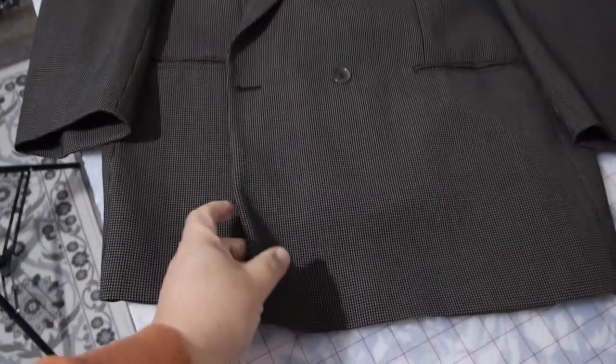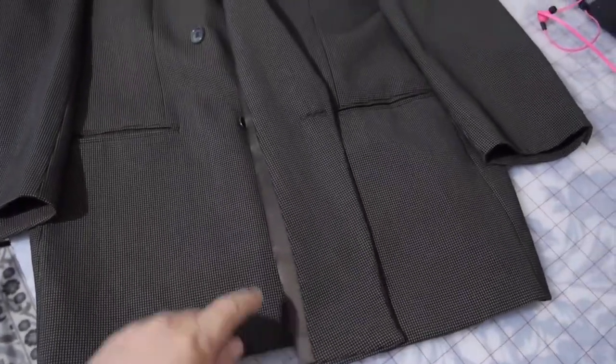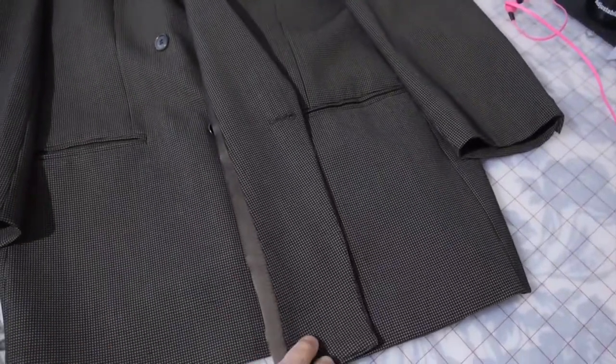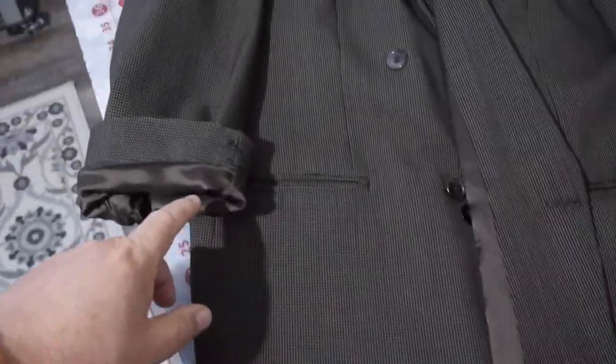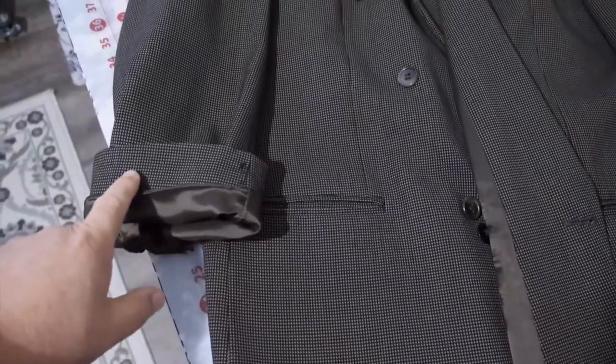So what you could do is what the tailor did in my case. You can find some fabric on the inside of the coat in the lapel area. Or you can look on the sleeve. Sometimes there's some extra fabric in here. You can also find some extra fabric on the hem of your coat also.